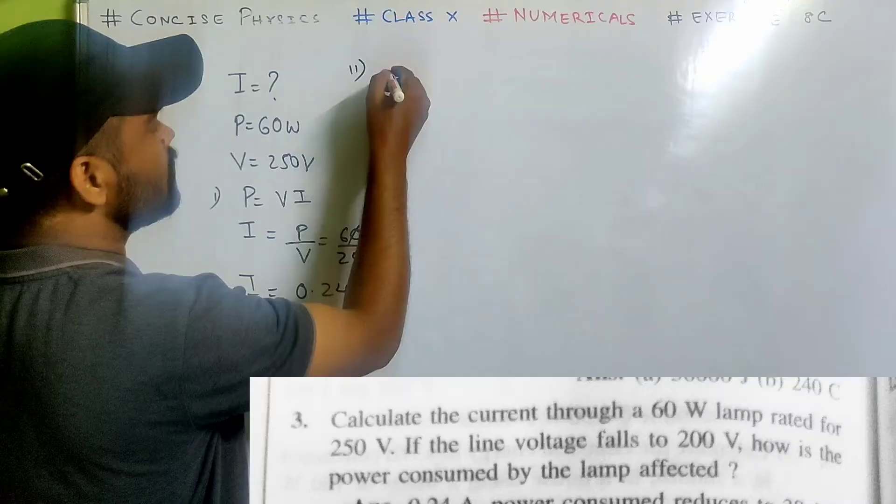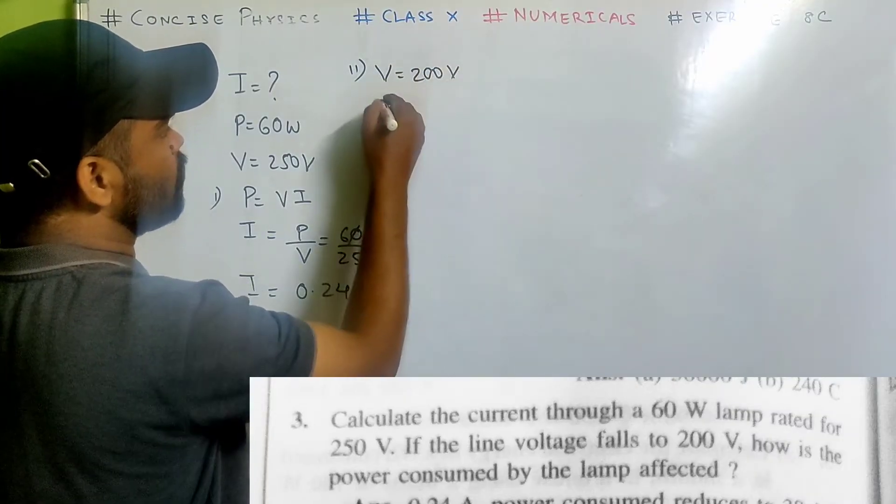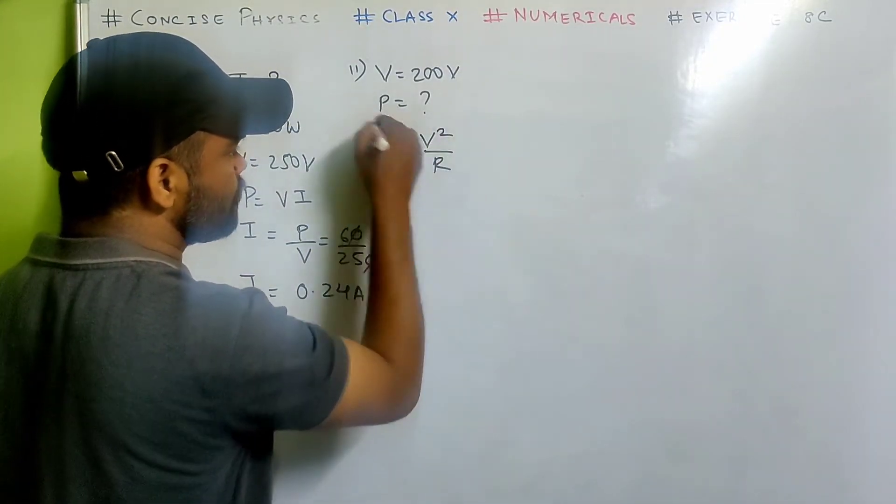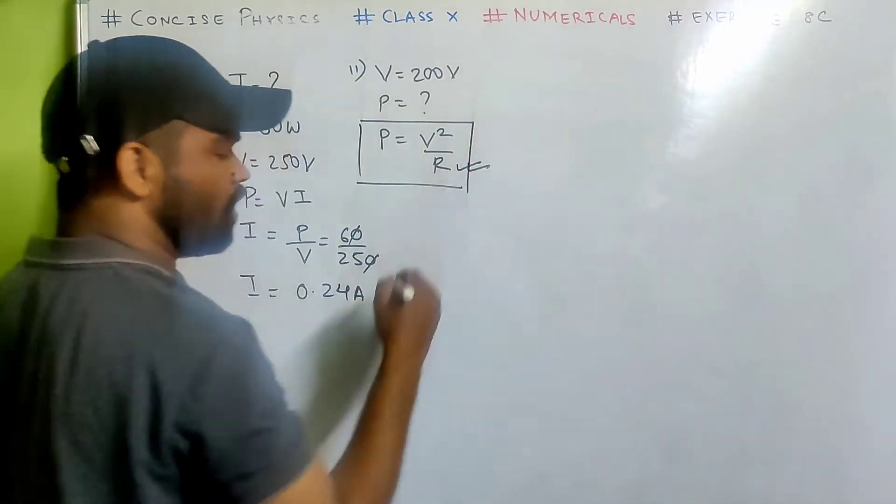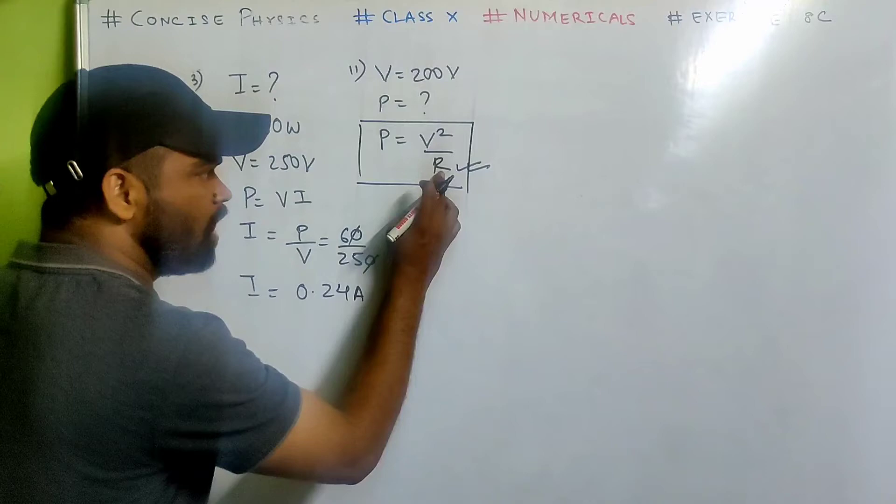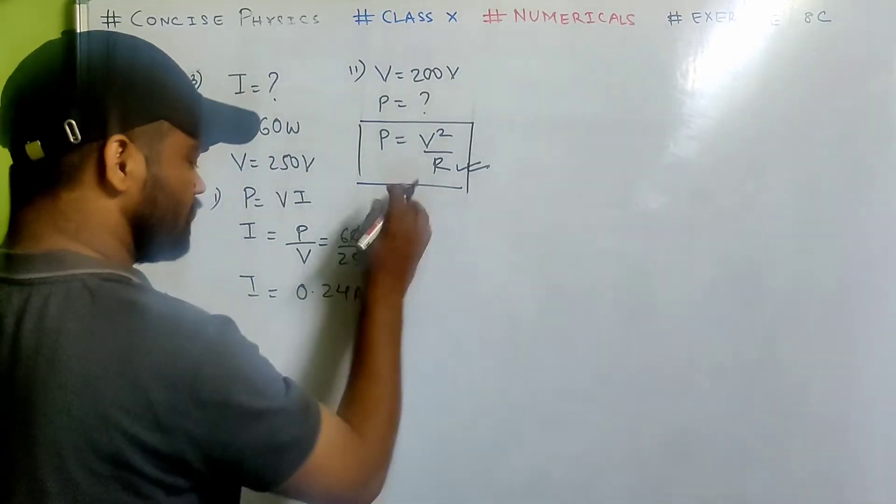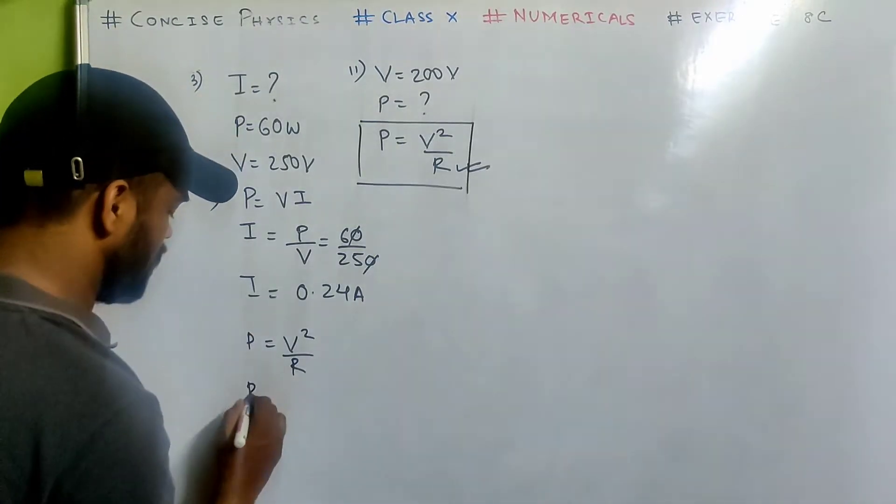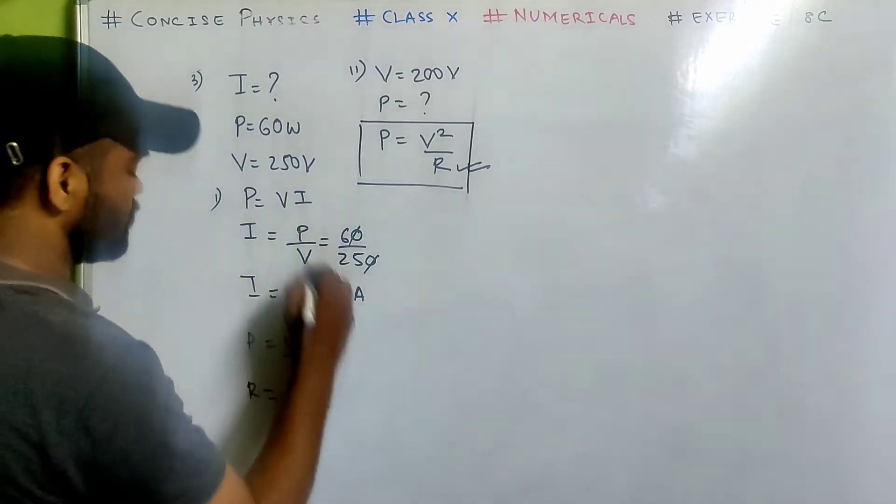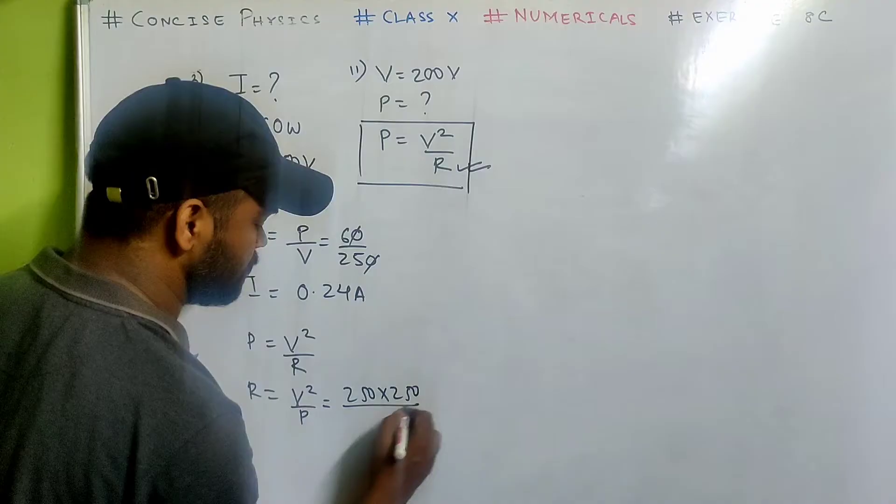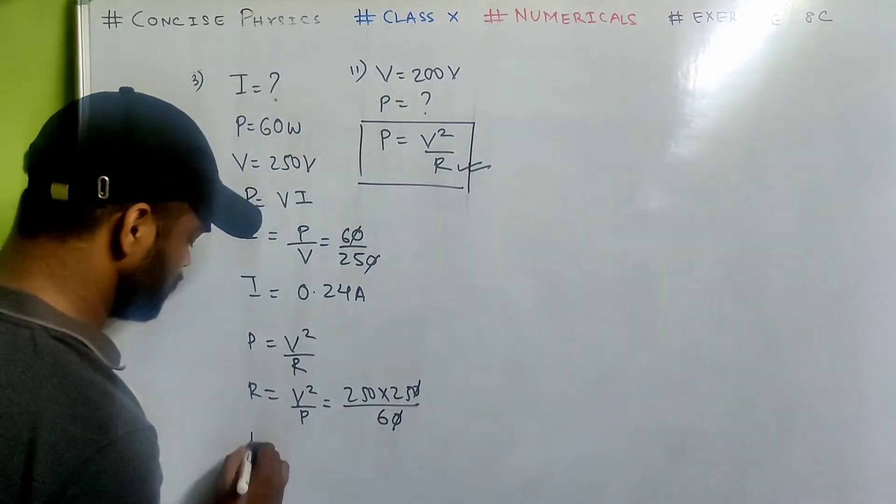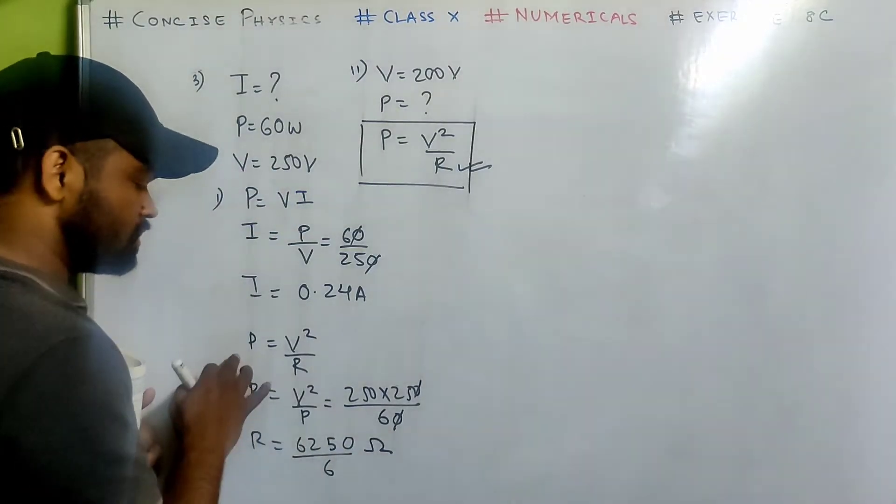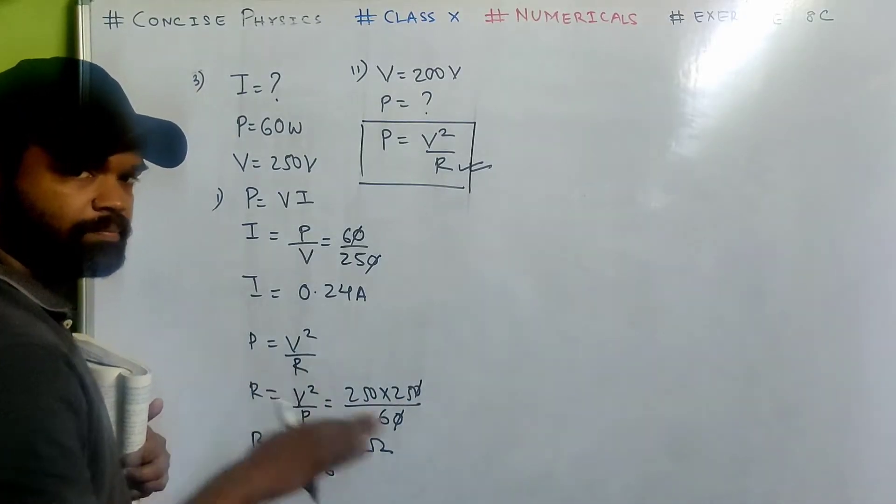Then they've told if the line voltage drops to 200 volt how is the power affected? Power equals to v square by r. Now the question arises why we are using this formula, why not p equals to v i, because we know r is constant. First of all find r from here. So p equals to v square by r. So r is v square by p that is 250 multiplied by 250 by 60. So r is 6250 by 6 ohm. Simple use of formula.